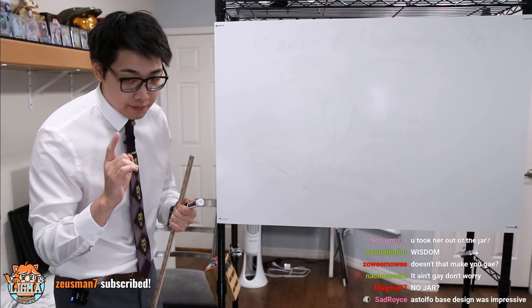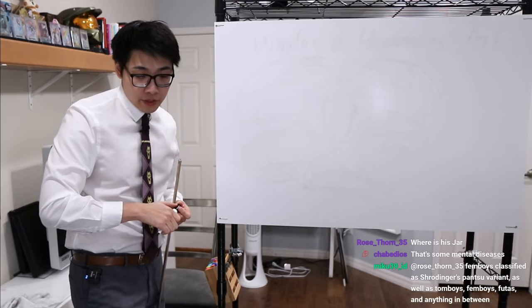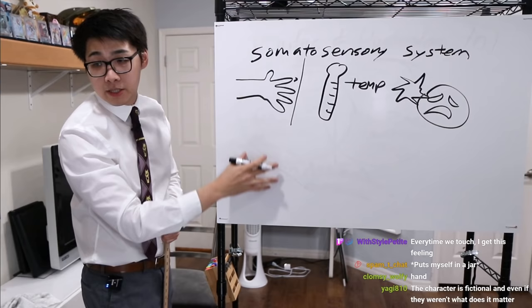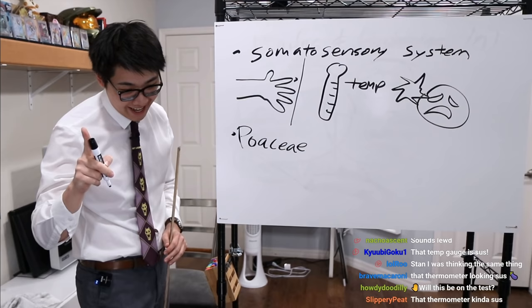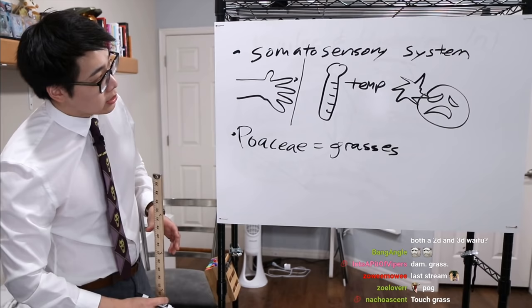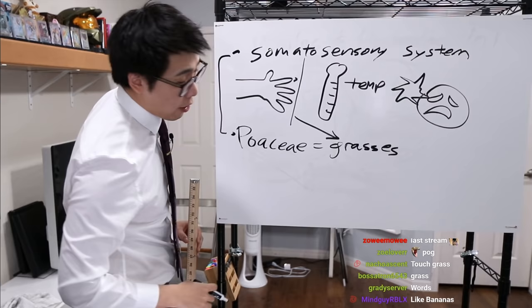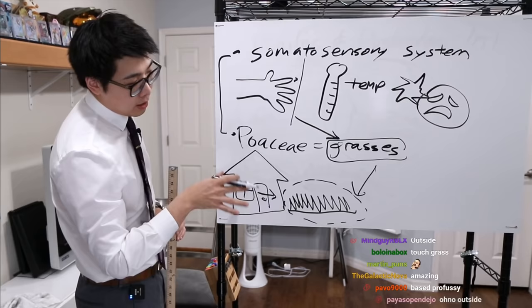I think I have a scientifically proven method to help cure you. The somatosensory system is a part of the sensory nervous system associated with the sense of touch, temperature, pain — your ability to sense physical sensation. That's the first concept. Second concept: Poaceae. It's a large and nearly ubiquitous family of monocotyledonous flowering plants known as grasses. So what you can do is apply both of these concepts to help cure yourself — you can touch the grass. The species is often found outside of your home primarily, so this does require you to leave your dwelling and go outside to touch the grass.